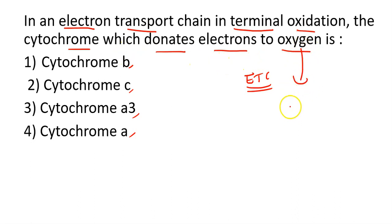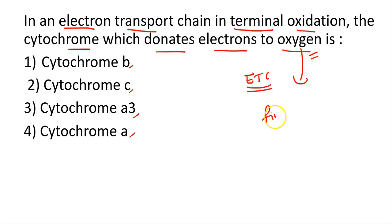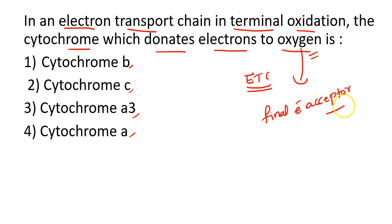Oxygen is the final electron acceptor in the electron transport chain. The cytochrome that donates electrons to oxygen — see, the electron transport chain tells us which cytochrome performs this function.